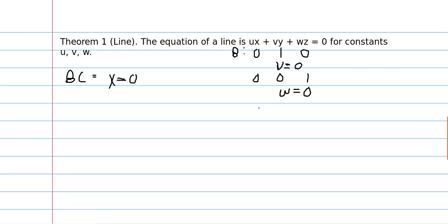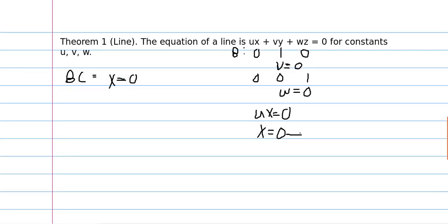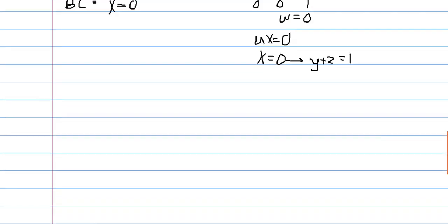So in fact, all we have left is ux is equal to 0, but that just implies that x is equal to 0. Alternatively, we can write that y plus z equals 1, because we always know that for any coordinate, x plus y plus z equals 1. But if x equals 0, then we know that just y plus z equals 1.